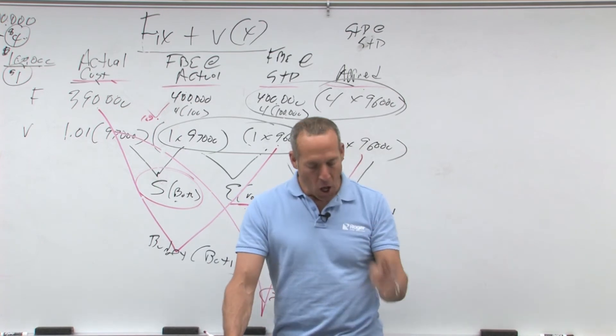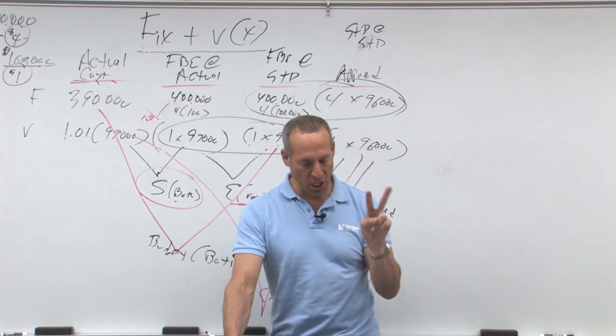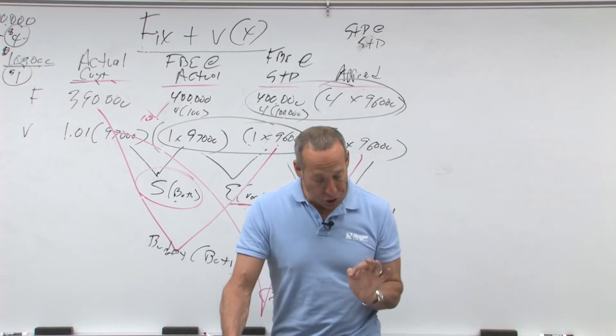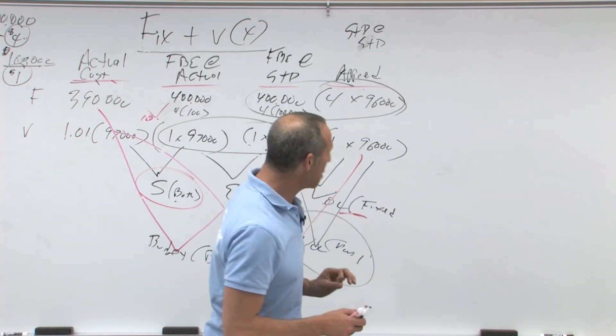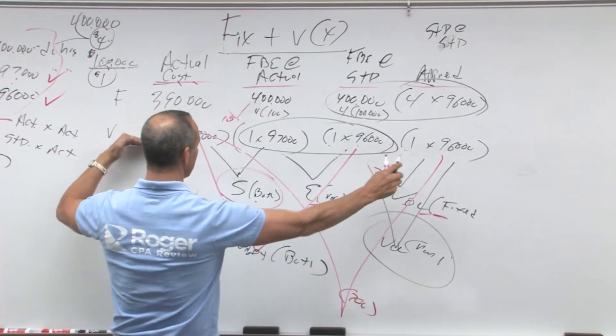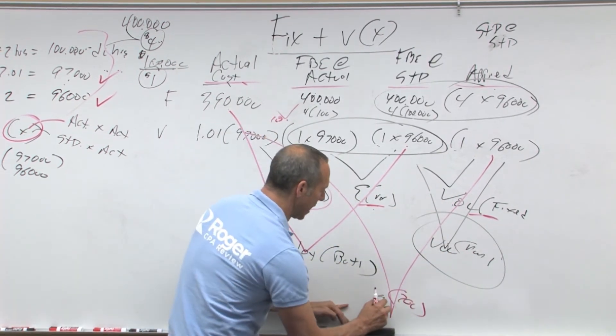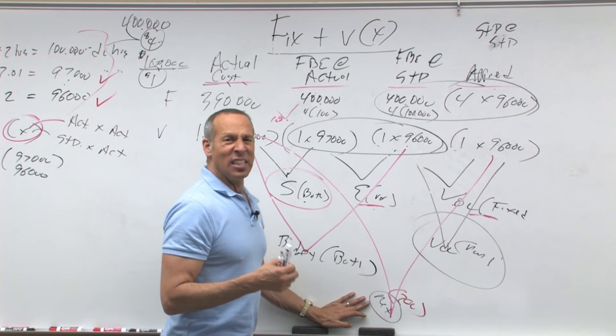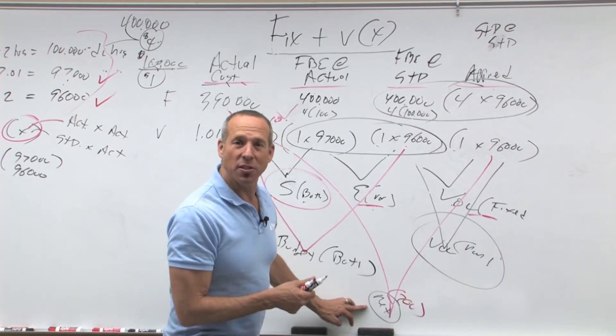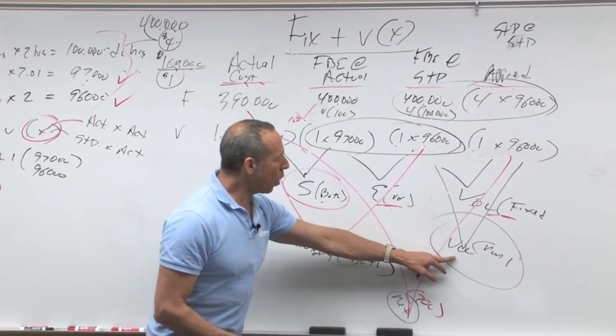Number two: under the two-variance method for analyzing overhead, which of the following variances consist of both variable and fixed overhead elements? So this is the three-variance method: spending, efficiency, volume. This is the two-variance, this is the net overhead, the one-variance method.